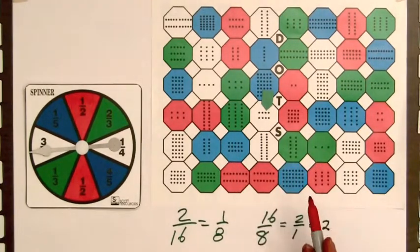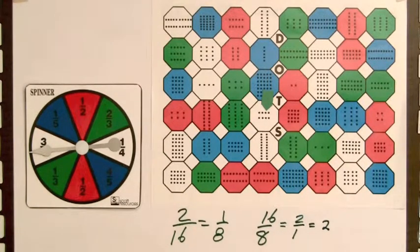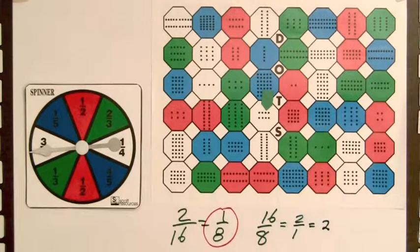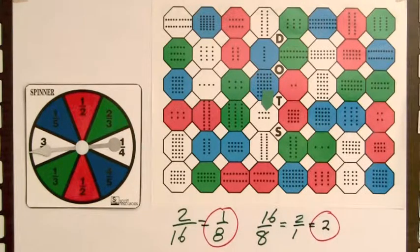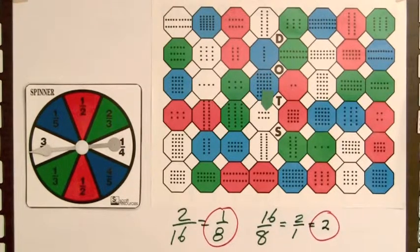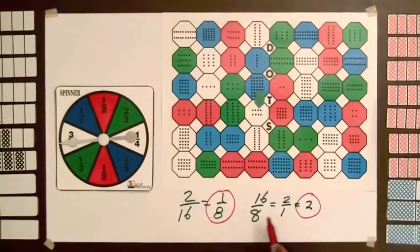This activity can be played like a game with two or more players. A player's score on each turn is determined by the ratio. For a ratio less than 1, the player receives 1 point, and for a ratio greater than 1, the player receives 2 points. The player receives a bonus of 1 point if the ratio is not in lowest terms and can be written correctly in lowest terms, as in these two cases.